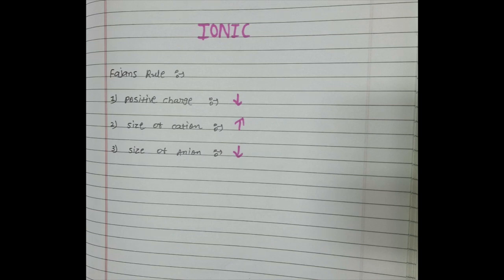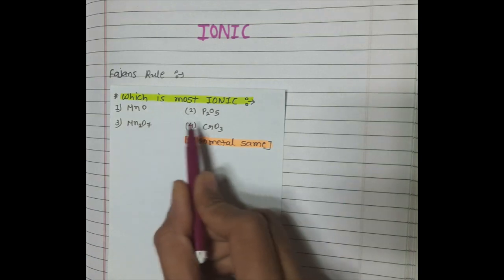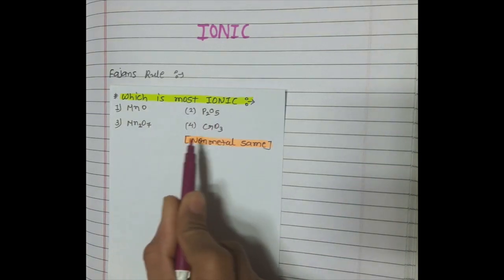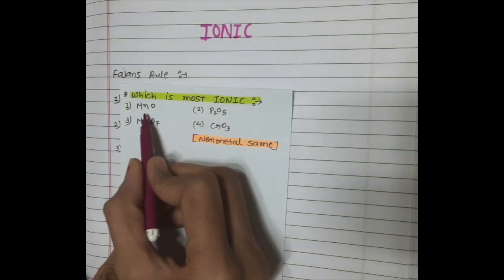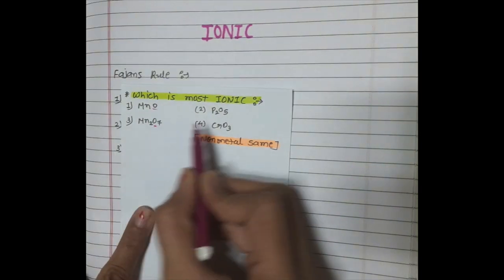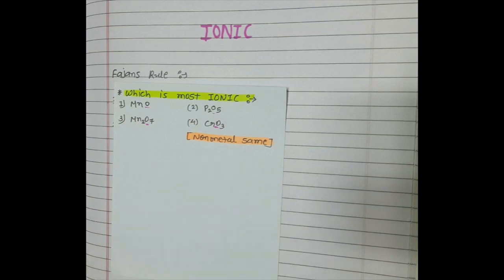For example, consider which is the most ionic compound. The given options are MnO, P₂O₅, Mn₂O₇, and CrO₃. First, note that oxygen is present in all four — the non-metal is the same. That means the anion is the same. So we only need to consider the cation.